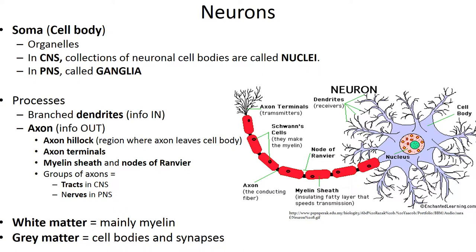The synaptic terminals possess many synaptic vesicles that contain neurotransmitters, which are used across the synapse or synaptic cleft found between the presynaptic cell and the postsynaptic cell. Some axons are covered with a white fatty protein-lipid known as the myelin sheath. Myelin protects and electrically insulates fibers from one another. Myelinated fibers conduct impulses rapidly and are white in appearance, while unmyelinated fibers conduct impulses slowly and generally have a gray appearance.